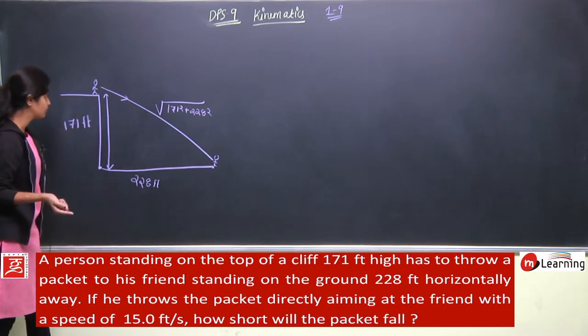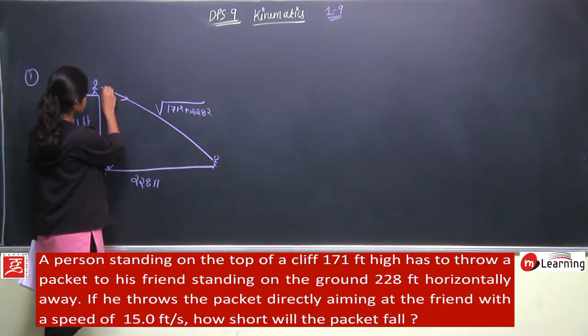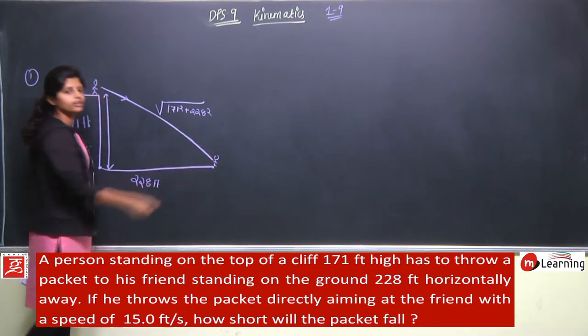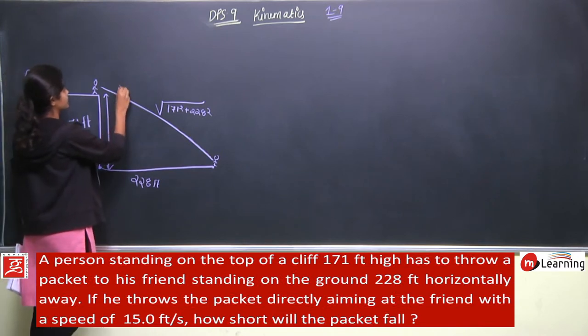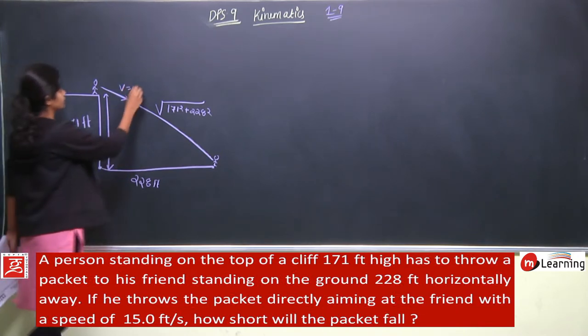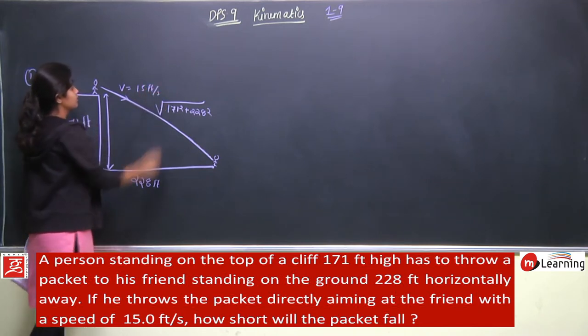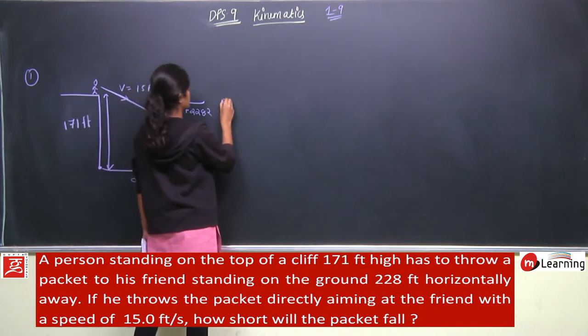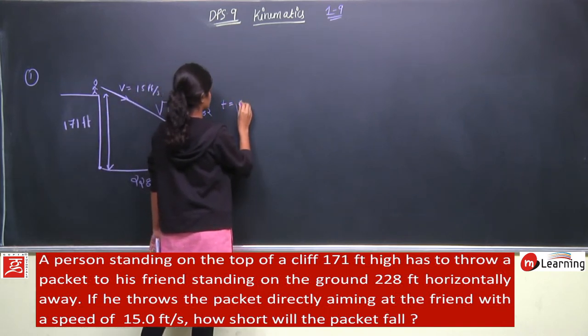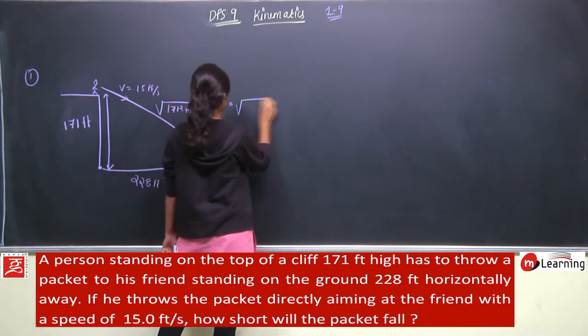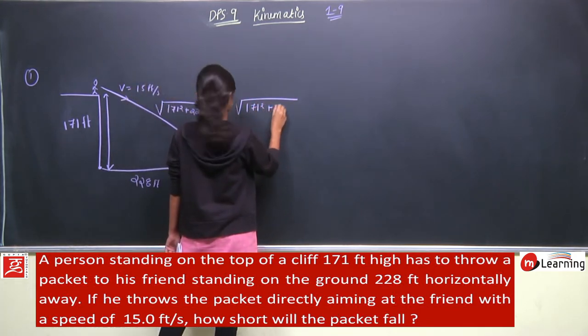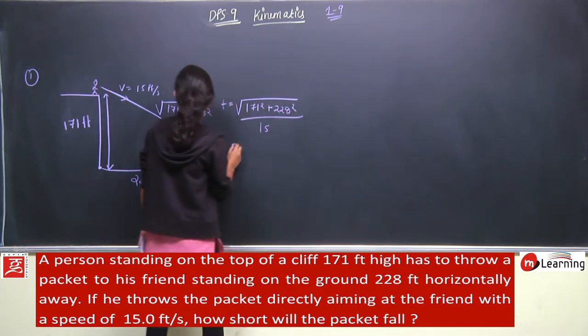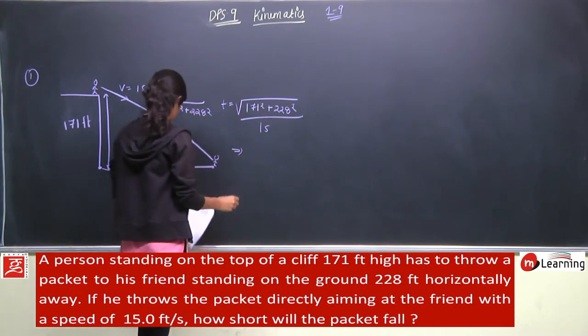Toh ye situation banti hai ki woh straight line uska jho trajectory hoga jho packet ka, woh straight line hoga aur kis speed se phek ra hai? Velocity dee rakhi hai 15 feet per second. How short will the packet reach to his friend? Time will be distance upon speed. Distance is 171 square plus 228 square divided by speed 15 feet per second. This comes out to be 19 second.